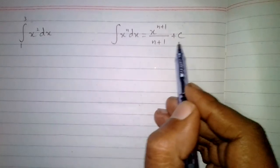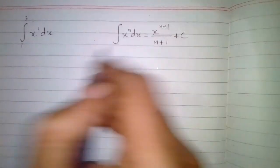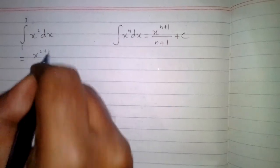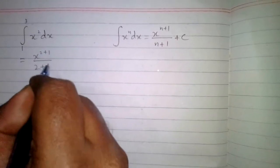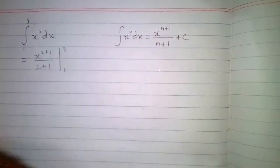So the integral of x square according to this formula is x to the power 2 plus 1 over 2 plus 1, and the upper limit is 3 and the lower limit is 1.